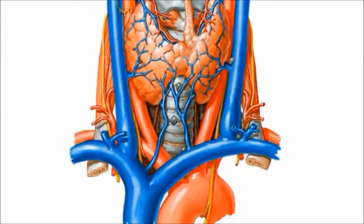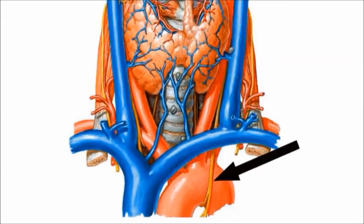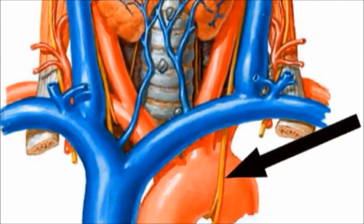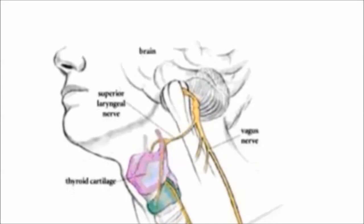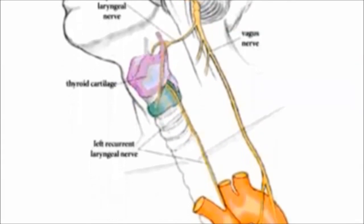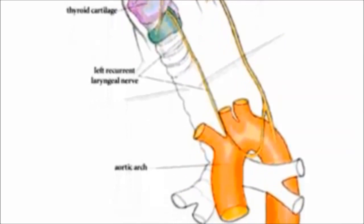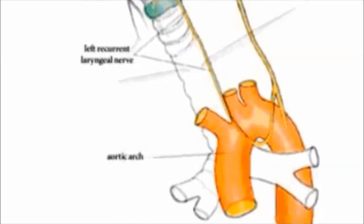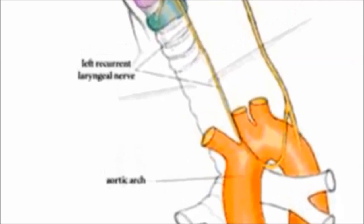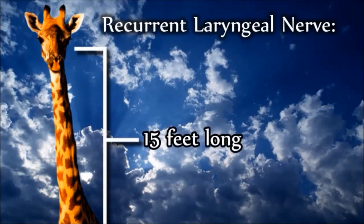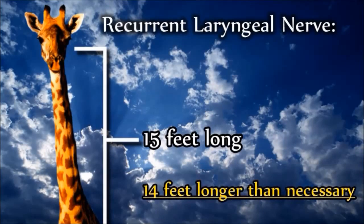Another seemingly wasteful structure is the recurrent laryngeal nerve, which regulates the ability to swallow in mammals, and in humans has the added function of controlling speech. In our mammalian ancestors, the nerve took a direct route from the brain to the throat, passing directly in front of the aorta. However, during the course of evolution, the aorta shifted inferiorly. Being such an important structure, the nerve could not be broken. So instead, it has become longer in order to loop back up and reach the throat. In giraffes, the recurrent laryngeal nerve is 15 feet long, a full 14 feet longer than necessary.